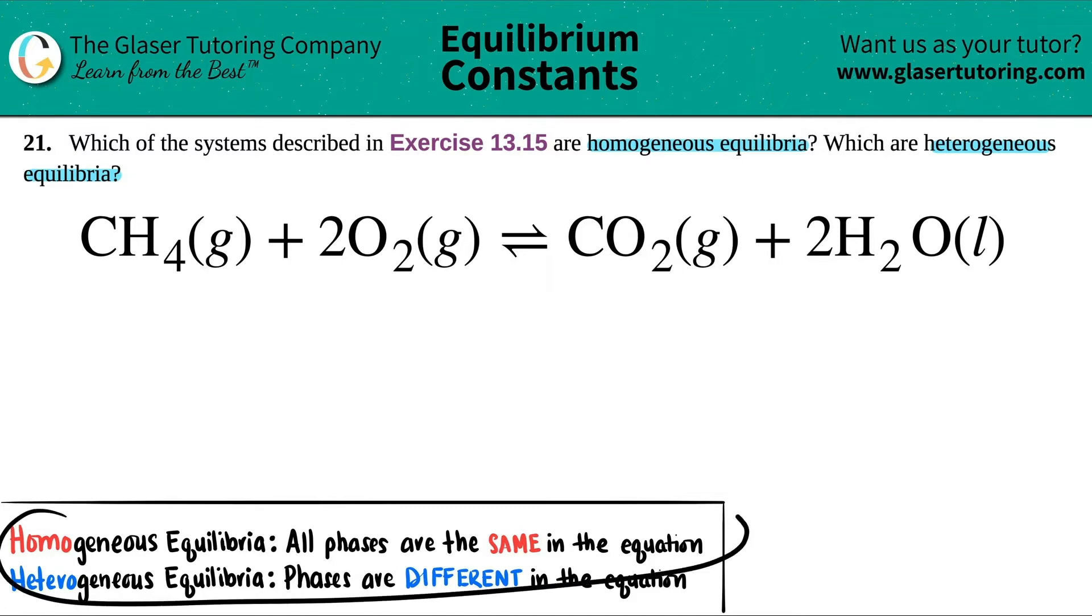Well, I wrote down here the rules. Homogeneous equilibria, all homogeneous equilibria, they will all have the same phases throughout the whole equation. Heterogeneous equilibria is when those phases are different in the equation. Now, what I mean by phases is the states of the compound or the molecule.